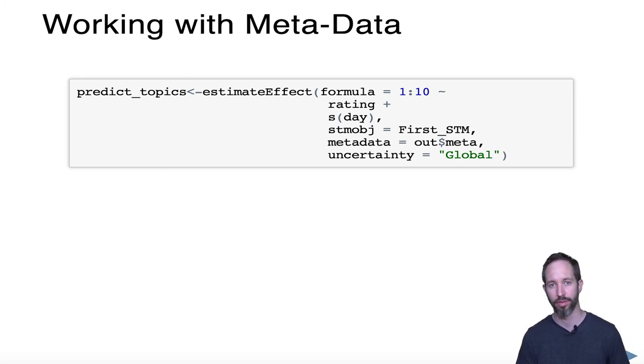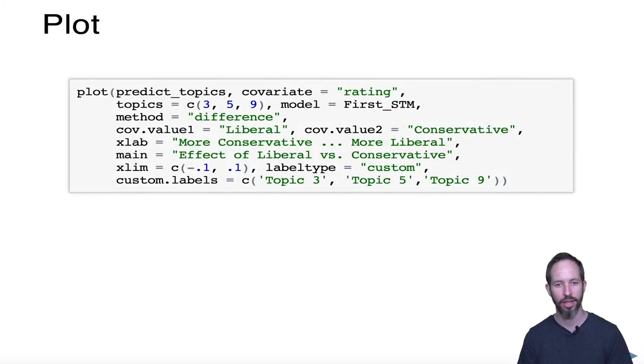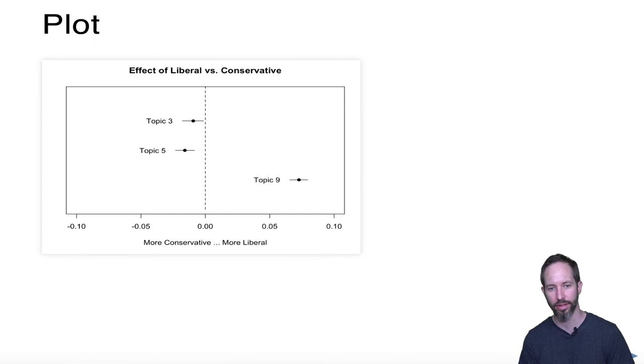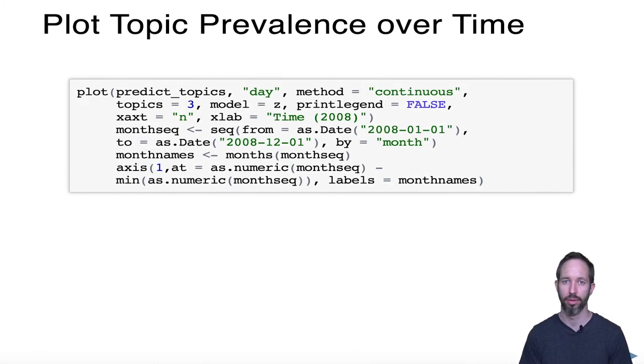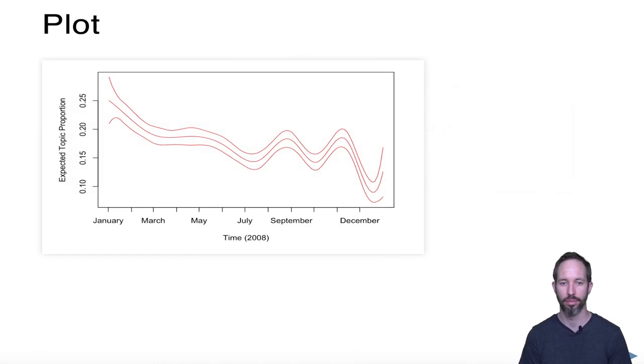Here we're going to plot the effects by a covariate, and we're going to plot them specifically by the liberal conservative rating and time. Here's our plot with some base R graphics. And here you can see topics three and five tend to lean more conservative, and topic nine tends to lean more liberal.